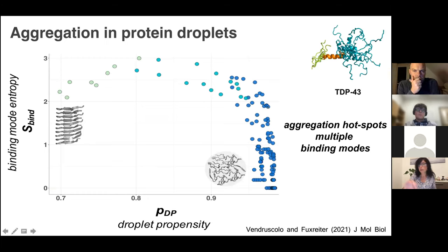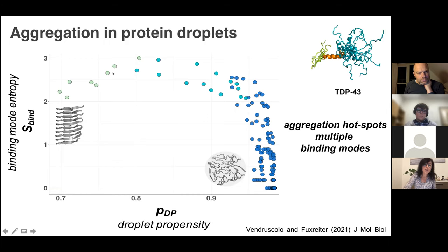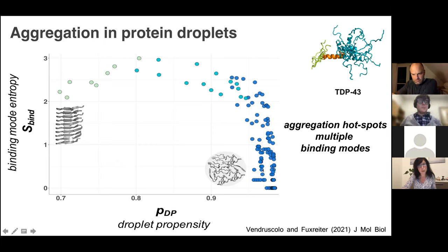All the dots correspond to residues in the TDP43 low complexity domain, and the y-axis shows binding mode diversity. The green dots have increased binding mode diversity—they can be disordered or ordered—and interestingly, these form the amyloid core of TDP43. The blue dots have very disordered binding with very low binding mode diversity, so they always promote droplet formation. The remaining dots are quite disordered but have high binding mode diversity—these are the aggregation hotspots for TDP43.